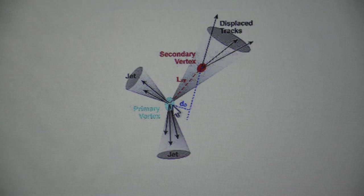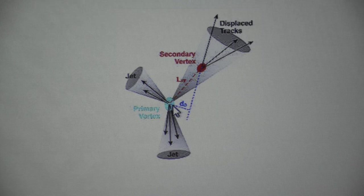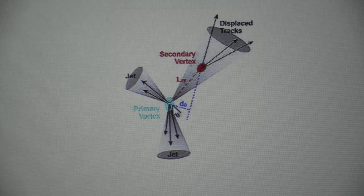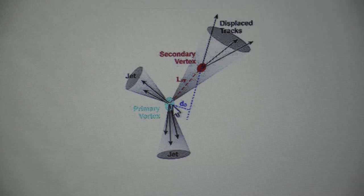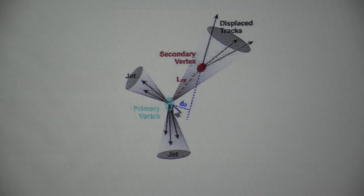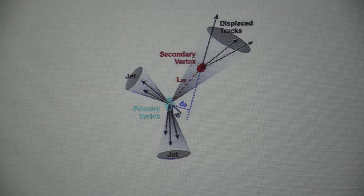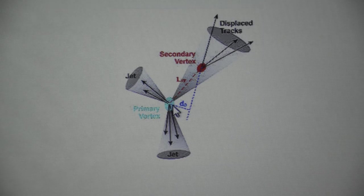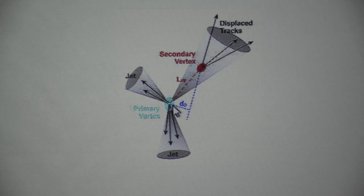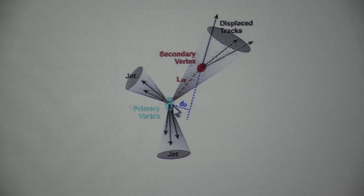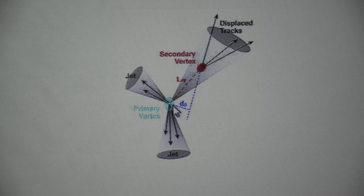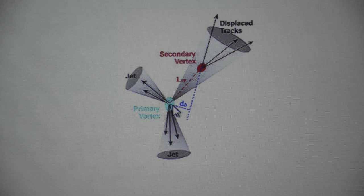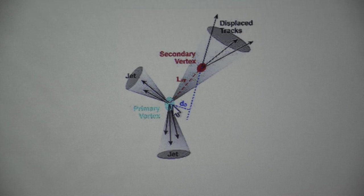In reality of course the impact parameter is a much better information which is geometrically defined in this fashion but that is a matter of detail. So, you can in fact detect B directly and this becomes very handy when for example you wish to reject the QCD background for any signal which has a B quark in it because QCD background will have very little B quark in it normally.